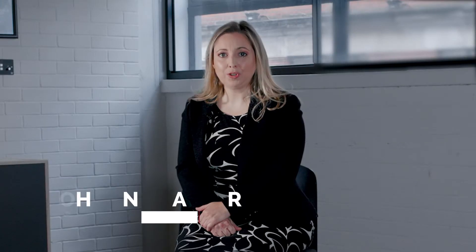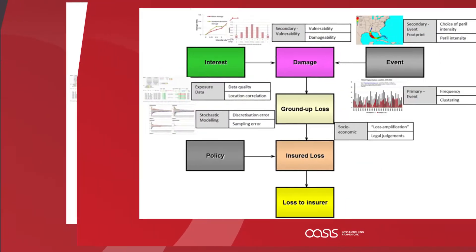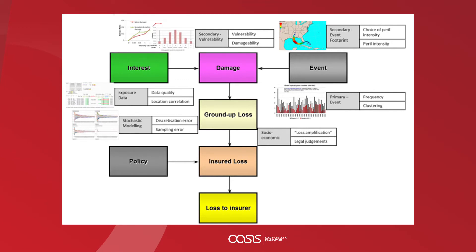The elements of the financial component are: number one, damageability; number two, ground-up loss; number three, the application of policy terms and conditions; and fourthly, the output calculations. All of these processes run within the OASIS kernel, which is the central calculation engine of the OASIS platform.